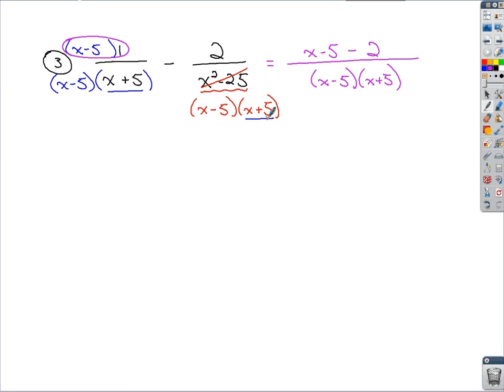If you combine your like terms in the numerator, you've got x minus 7 over the factored form of x minus 5, x plus 5. Keeping everything in the factored form, you'll look to see if you can cancel anything out so you can reduce it down further. Obviously that's not going to happen here, so you've got your answer.